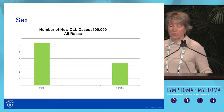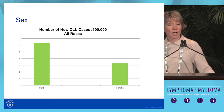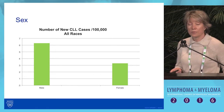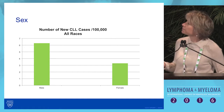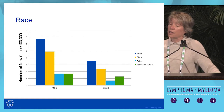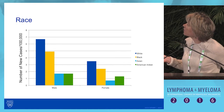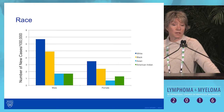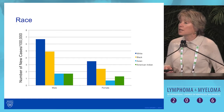Another risk factor is sex. CLL has a higher incidence in males than in females, and this is true across all races. The underlying biology of this is still unknown. Race is another risk factor for CLL. Caucasians have higher incidence rates compared to Asians, both for males and females. Again, it's unknown why there's this variability in incidence in CLL.